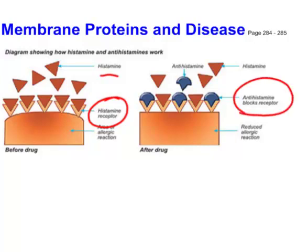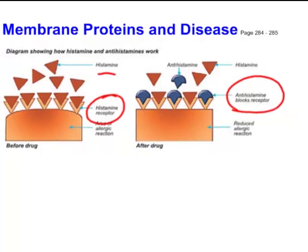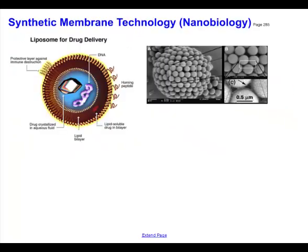An antihistamine is a manufactured molecule created in the lab. What it does is block some of these receptors so that not all of the histamine molecules can get in and stimulate the allergic reaction — they're being blocked out by the antihistamines.